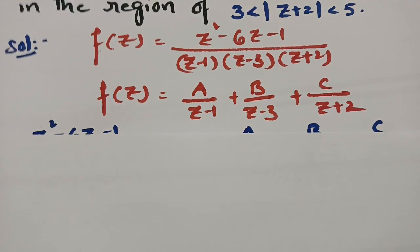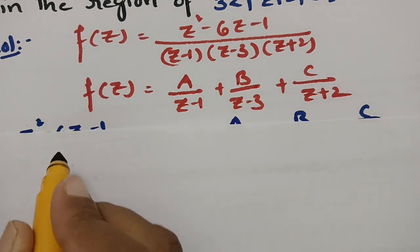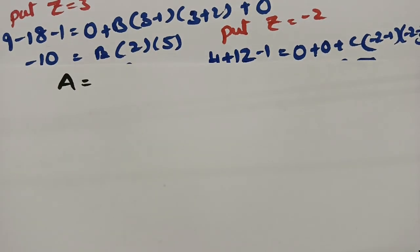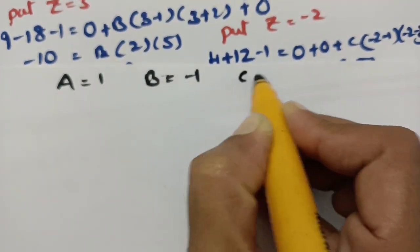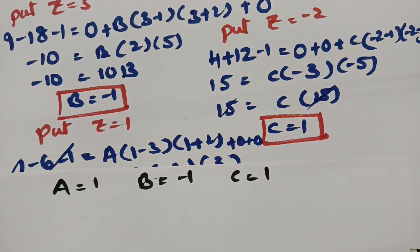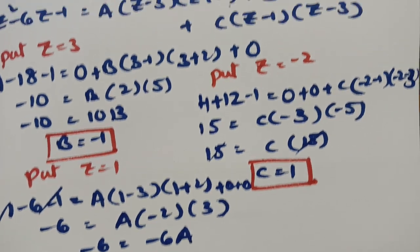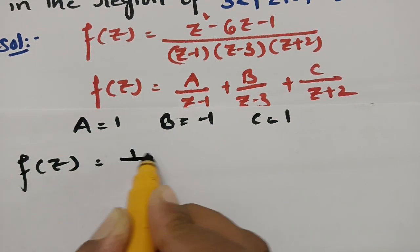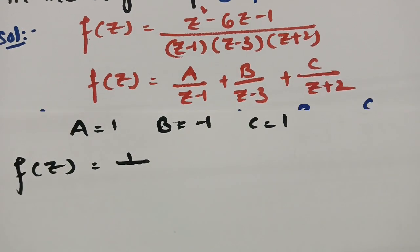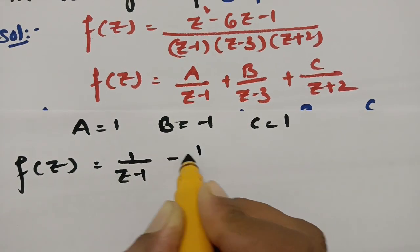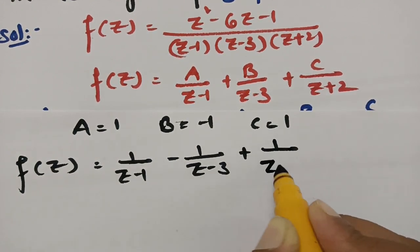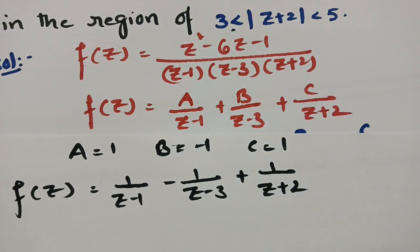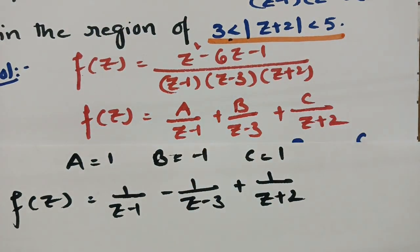Substituting A = 1, B = −1, and C = 1 into the partial fraction form, f(z) = 1/(z−1) − 1/(z−3) + 1/(z+2). The region given is 3 < |z+2| < 5. Since we need z+2 throughout, we rewrite: z−1 = (z+2) − 3, and z−3 = (z+2) − 5, giving f(z) = 1/[(z+2)−3] − 1/[(z+2)−5] + 1/(z+2).